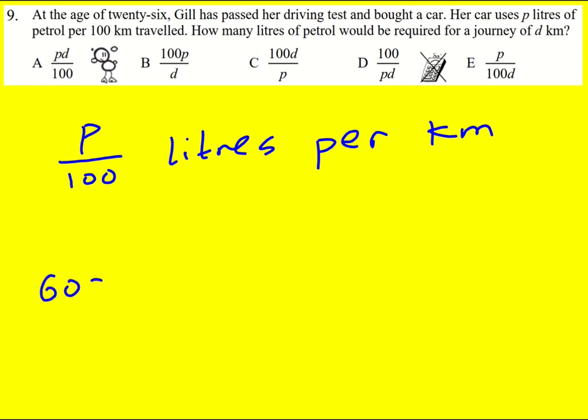For example, if I have 600 liters, I mean this is a ridiculous amount, but 600 per 100 kilometers, then clearly we divide through by 100, it's going to be 6 per 1 kilometer. It's not a bad idea to bring numbers into it if it helps. So that's liters per kilometer.